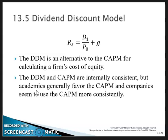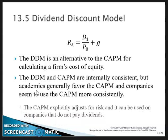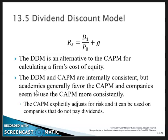The CAPM explicitly adjusts for risk and can be used by companies that don't pay dividends, whereas using the Dividend Discount Model is not an option for a firm that doesn't pay a dividend.